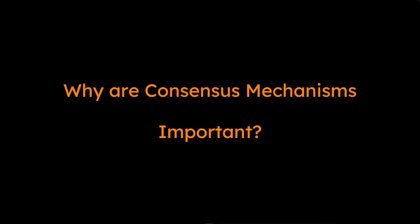So you might be wondering what is it about consensus that makes it so vital in blockchain? There are a few things to consider. Trust and security: in traditional systems such as finance, we rely on intermediaries such as banks, governments, or similar institutions to validate transactions and maintain trust. Blockchain removes the need for these intermediaries by relying on consensus among network participants. Every transaction is verified through a specific process and is only added to the blockchain when all participants agree that it's valid. This consensus-based trust ensures that transactions are secure and tamper-resistant.